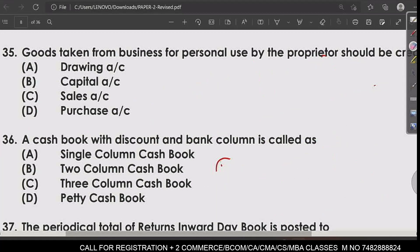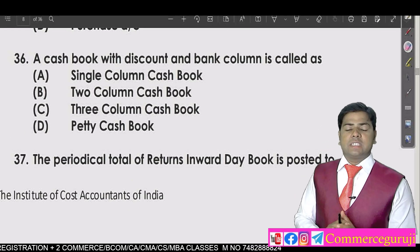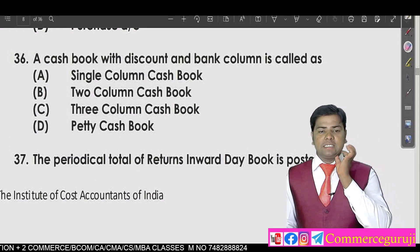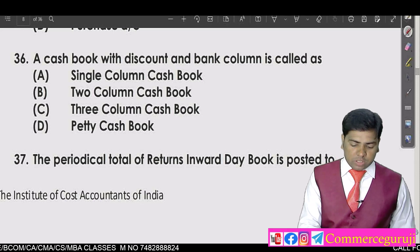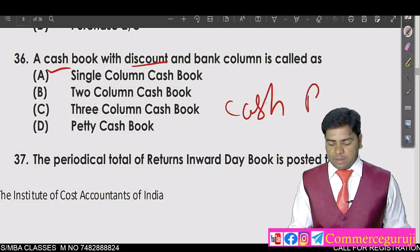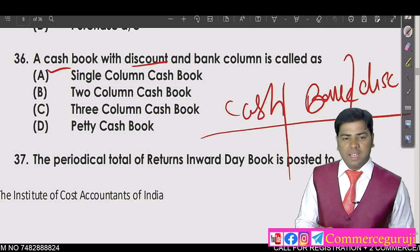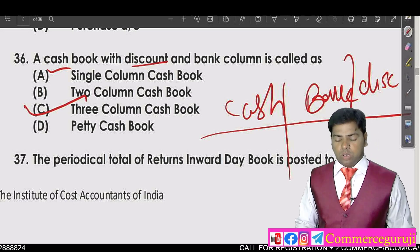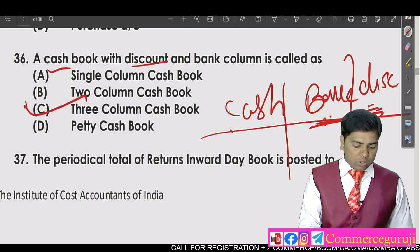Question 36: A cash book with discount and bank columns is called what? It has a bank column and a discount column — that makes it a three-column cash book. The correct answer is option C: triple column cash book.